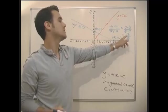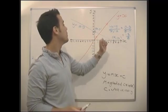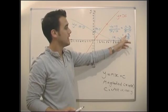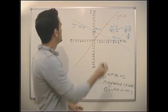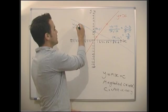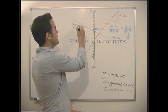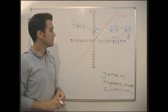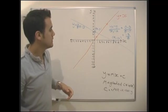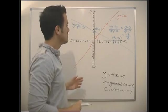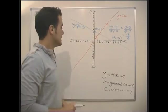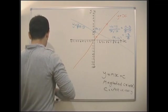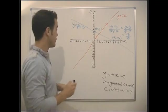So what does that tell us? 0 minus 3 is minus 3. 8 minus 0 is 8. So we actually get the gradient is minus 3 eighths. So that's exactly what we wanted. We wanted something that was less than 1, minus 3 eighths is definitely less than 1, and we wanted something that was negative. So the equation of that line is minus 3 over 8 x plus 3. And that's how we work out the equation of a line, just y equals mx plus c.